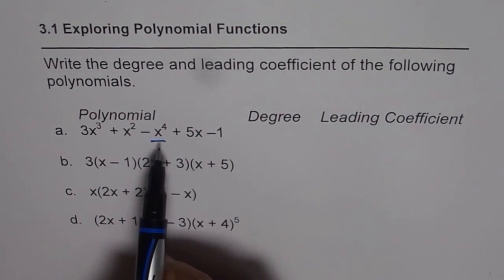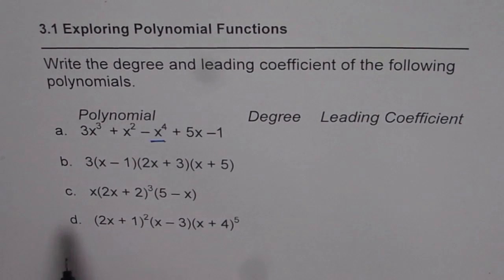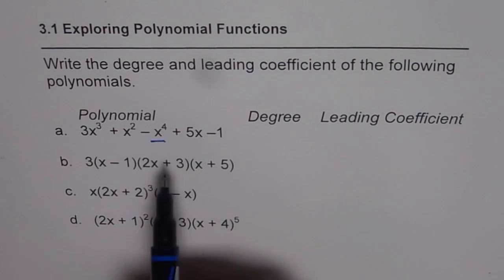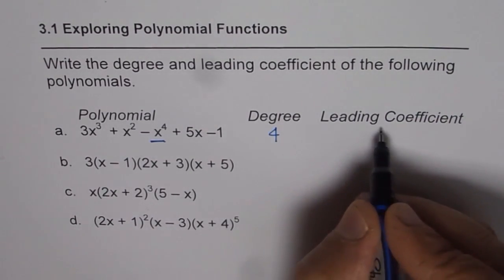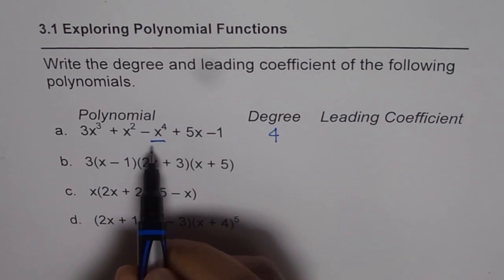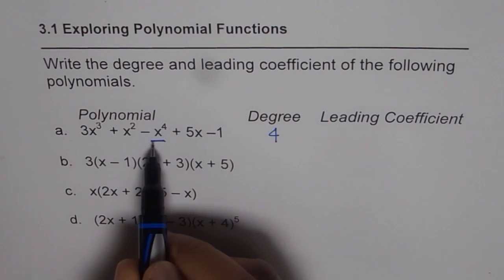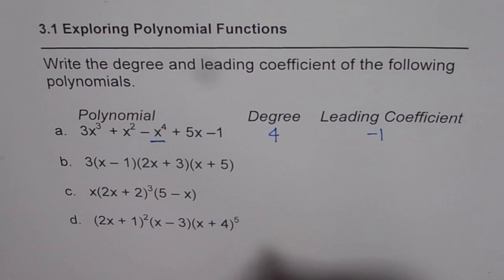So here the degree of the polynomial is four since the variable x has highest exponent of four in any of these terms. So that is the degree. What is the leading coefficient? Leading coefficient is coefficient of the term with highest degree. So this term has a leading coefficient of minus one. So that is the first one.